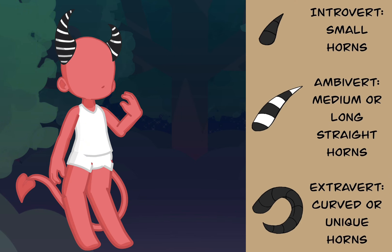If you're an introvert, you'll have small horns. An ambivert will have medium or long straight horns. Or if you're extroverted, you'll have curved or unique horns.